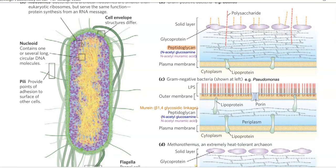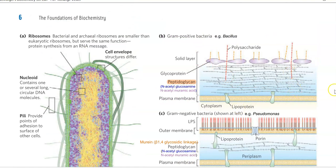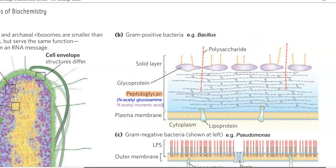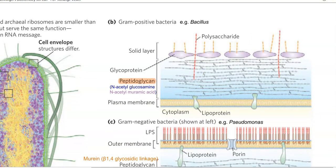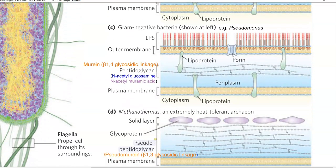This image shows the cell wall of a gram positive, gram negative, and an Archaea organism. An example for a gram positive organism is Bacillus. For gram negative, you can see the outer membrane made up of lipopolysaccharide and a thin layer of peptidoglycan. An example for a gram negative bacteria is Pseudomonas.